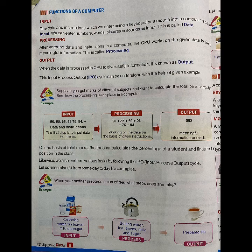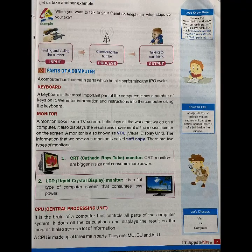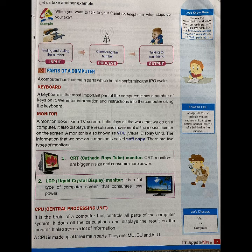Output — when the data is processed in the CPU to give useful information, it is known as output. A computer has four main parts which help in performing the IPO cycle. The keyboard is the most important part of the computer — it has a number of keys on it and we enter information and instructions into the computer using the keyboard.